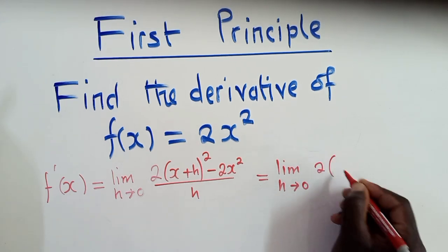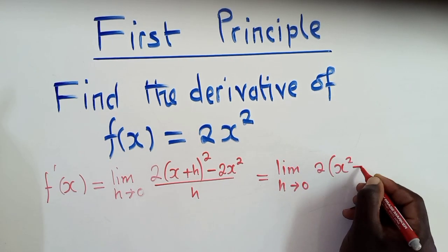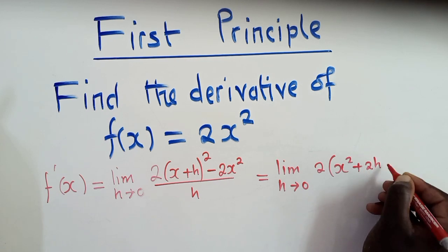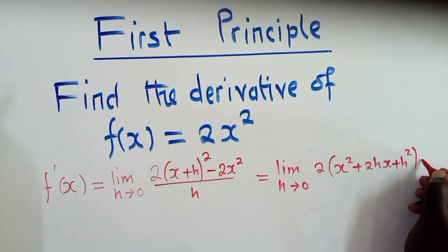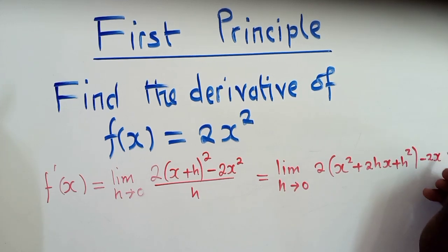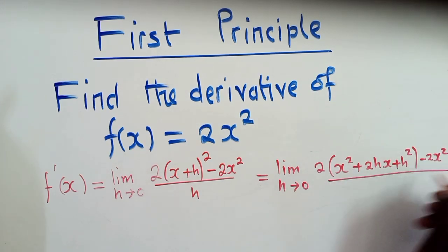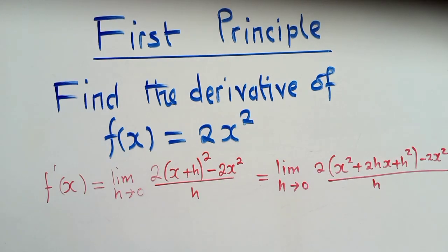So we shall have 2x² plus 4hx plus 2h². Then you close. You say minus 2x². Everything over h.